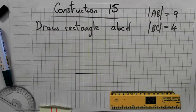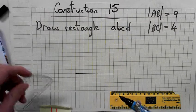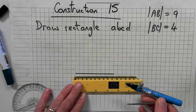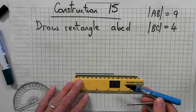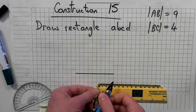Alright, construction to draw a rectangle. We're going to use the ruler, compass, and protractor. First of all, draw a line segment which is nine units. Then get your compass.